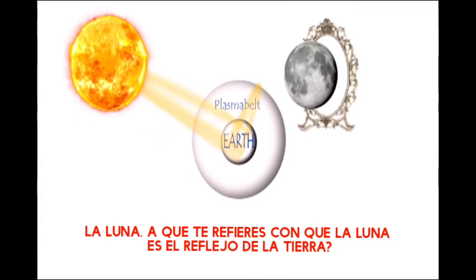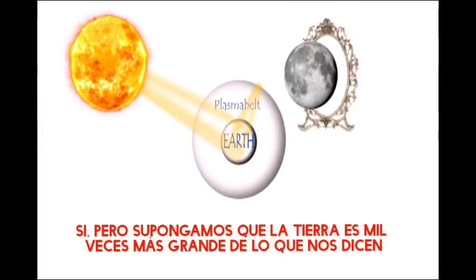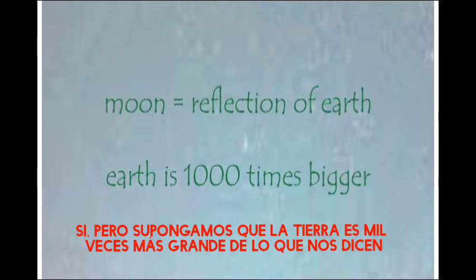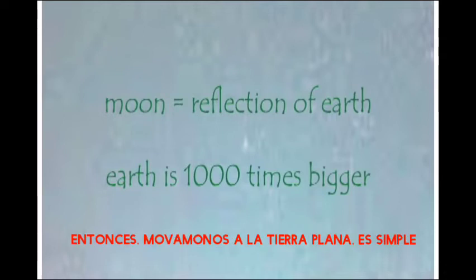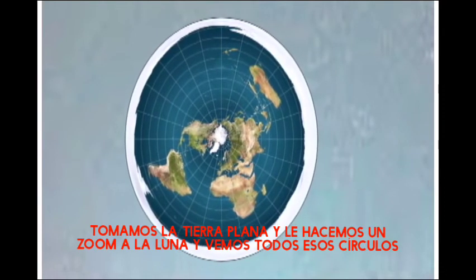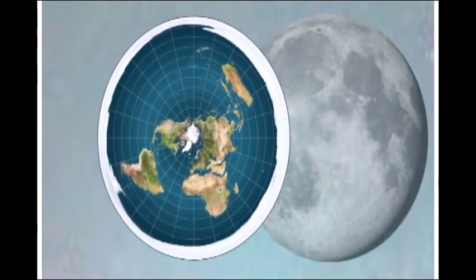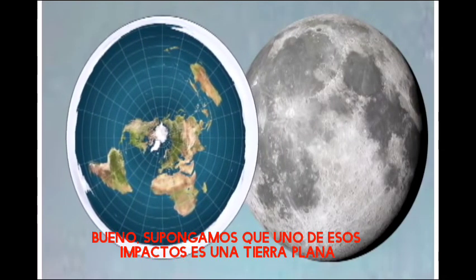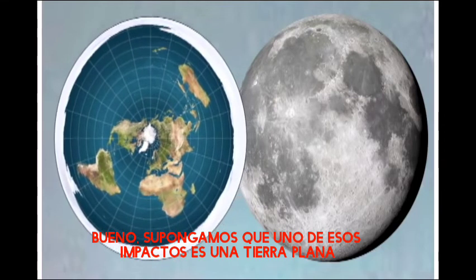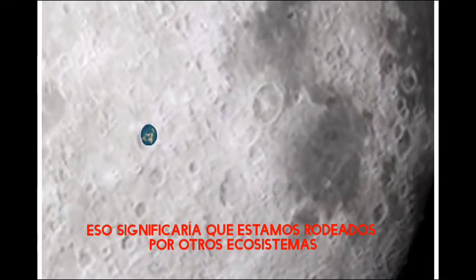What do you mean the Moon is the reflection of Earth? What about all the rivers and the forests? Well, let's suggest that Earth is a thousand times bigger than we are told. Then the Moon is a reflection of a gigantic big Earth. Now let's move over to the Flat Earth. We take the Flat Earth and we zoom in into the Moon. We see all those circles — the so-called asteroid impacts. Let's suggest that one of those asteroid impacts is a Flat Earth. That would mean that we are surrounded by other biosystems.